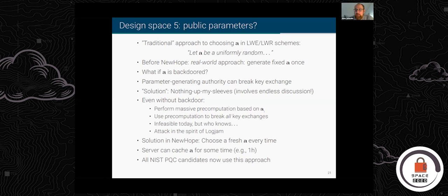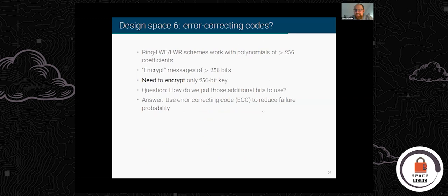What we proposed in New Hope — and what now all NIST candidates do — is to choose a fresh A every single time. Alice picks a seed, expands it, sends the seed as part of the public key. If you want to cache it, you might cache it for an hour, meaning somebody doing the massive computation can break all key exchanges of that one user during that one hour — but at least not everyone else is at risk.